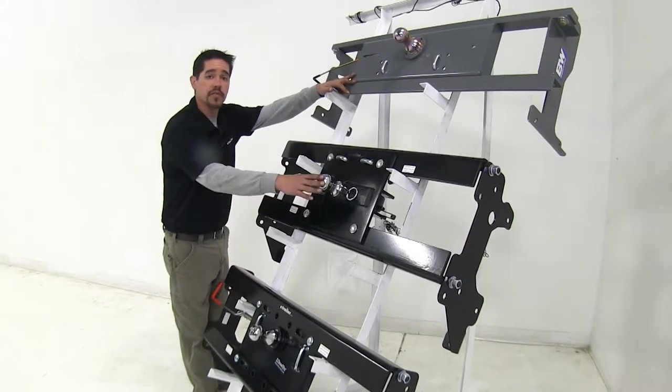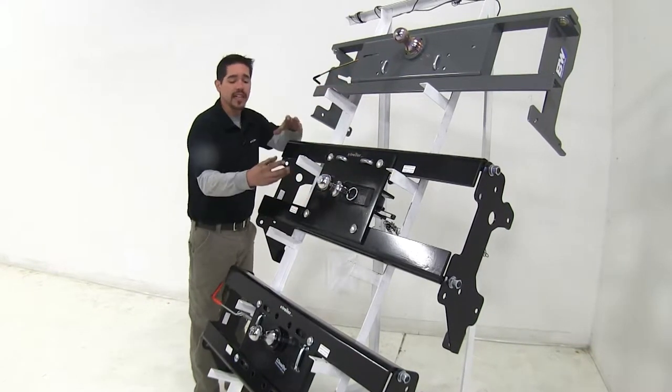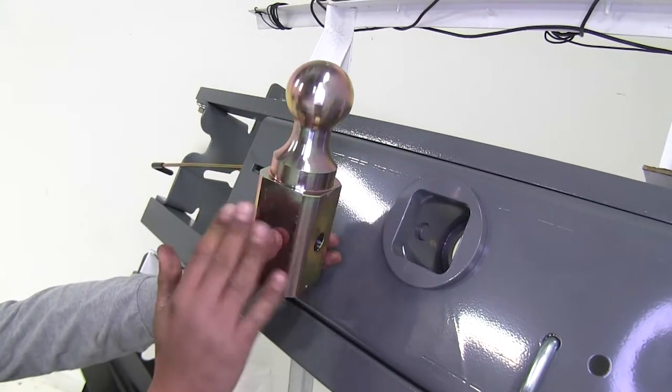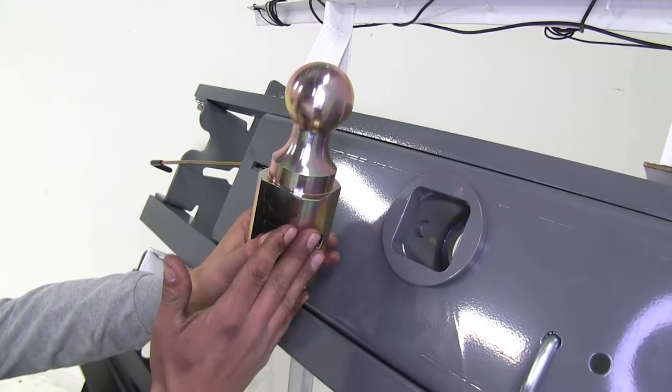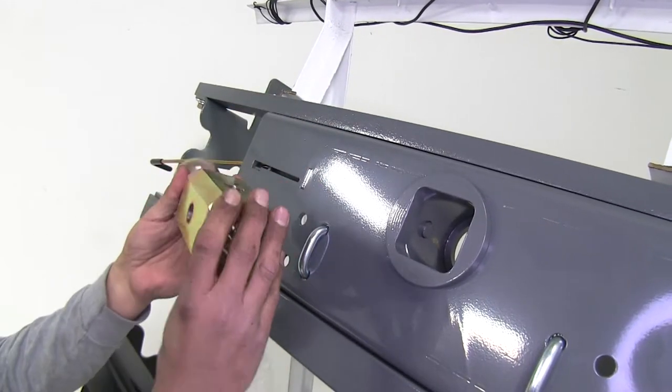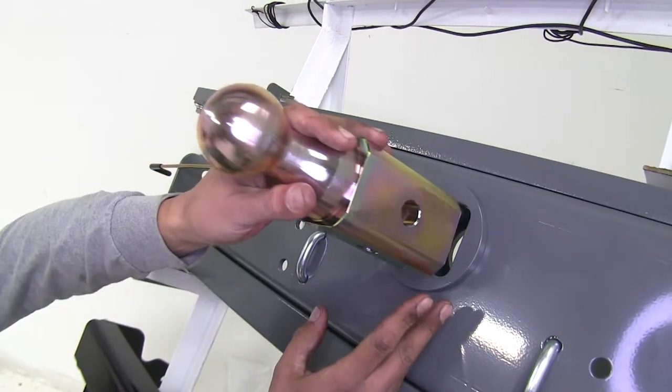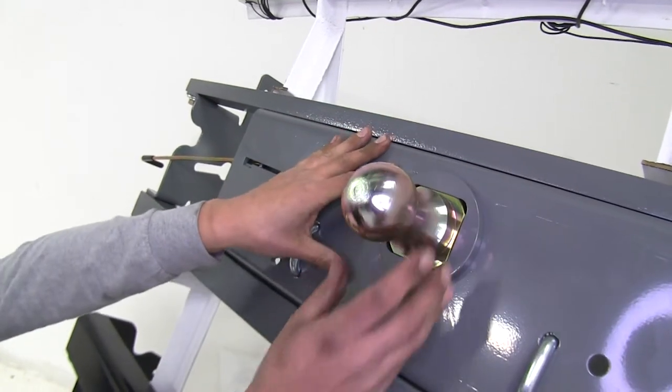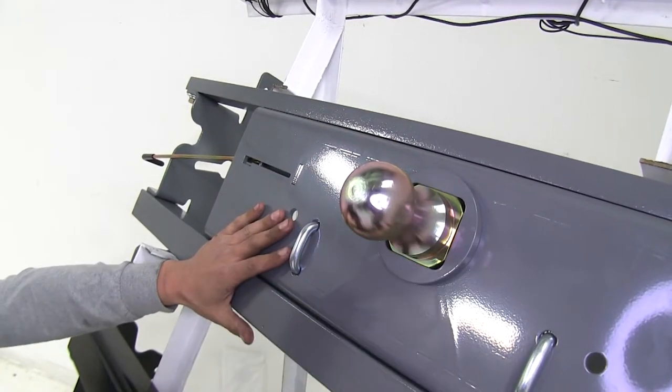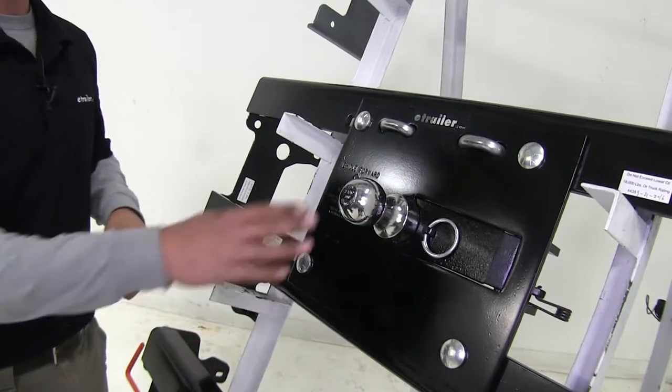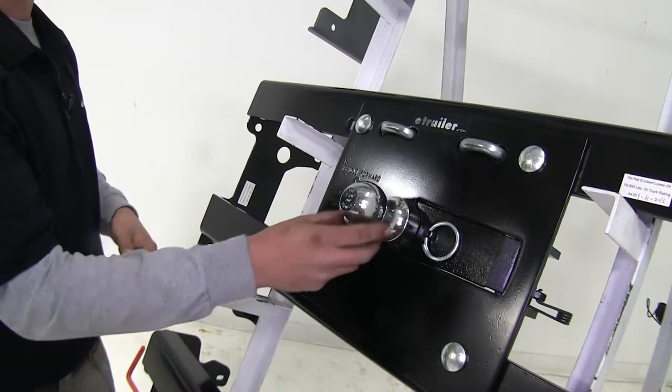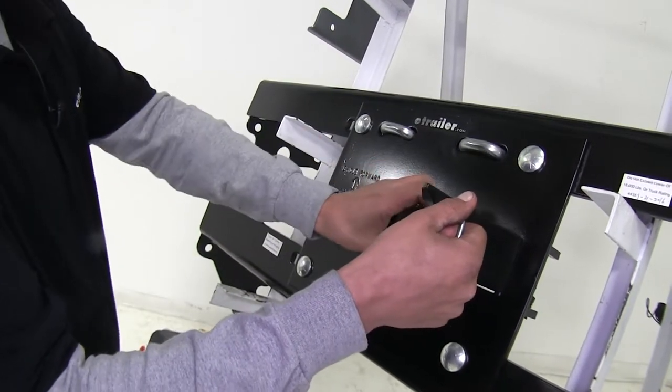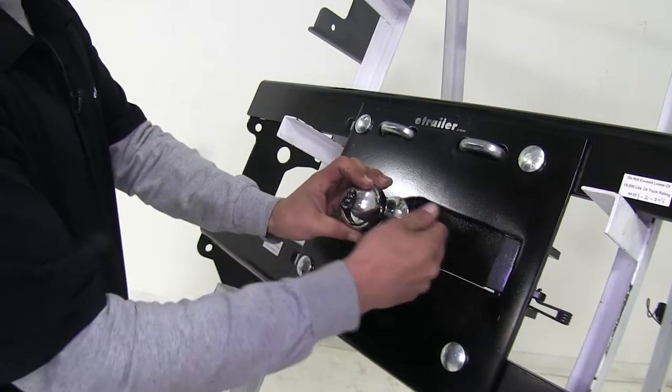Now each one of our goosenecks does feature a 2 and 5 sixteenths ball, but they all have slight differences to them. The B&W turnover ball here, the nice thing about this is the finish looks a little bit different than a standard chrome ball. And that's because it's anodized. And as you can see, it has a square shank, which is going to help reduce all the rattle noise. And it's also going to make sure that when you're hooking up to your trailer, it's not going to turn when you're going to hook up. Now our fold down here also has a 2 and 5 sixteenths ball, but this one is going to have a chrome finish on it, as well as it's permanently attached, and we're not going to be able to remove it, but we still can stow it away.